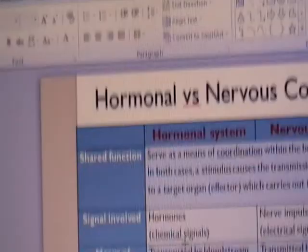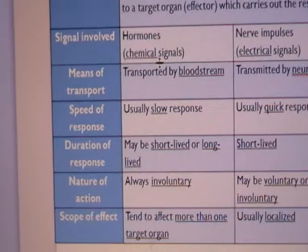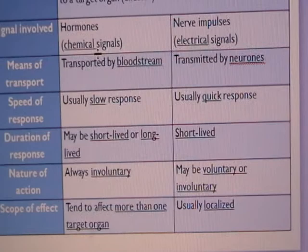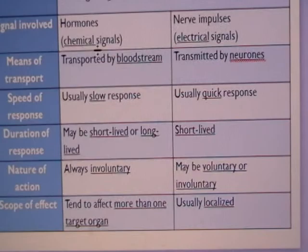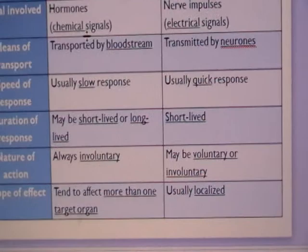The nature of action for the hormonal system is always involuntary — you cannot control your body to release certain hormones. However, for the nervous system the nature of action may be voluntary or involuntary. For example, your reflex action is involuntary, but your daily movements that help you move around are voluntary actions.